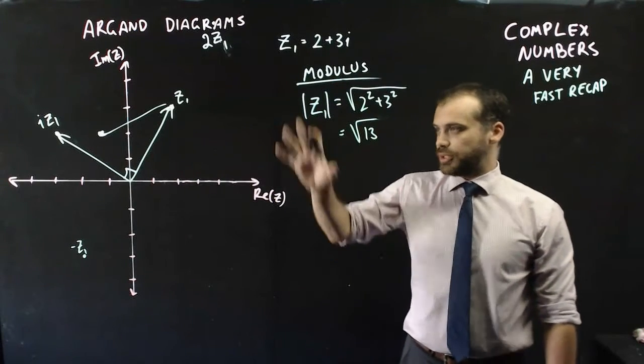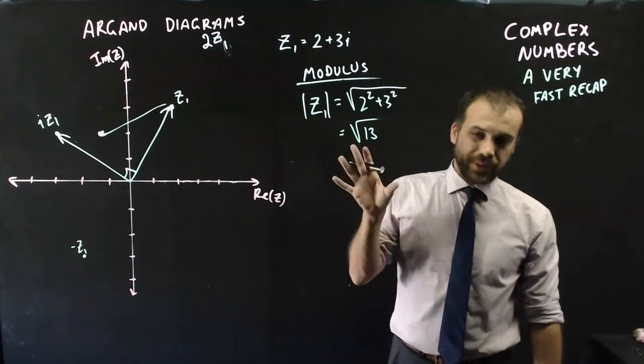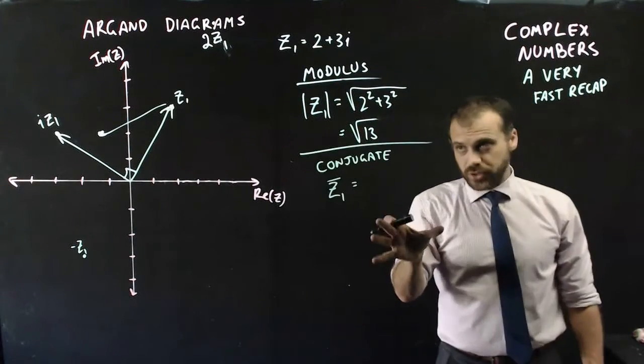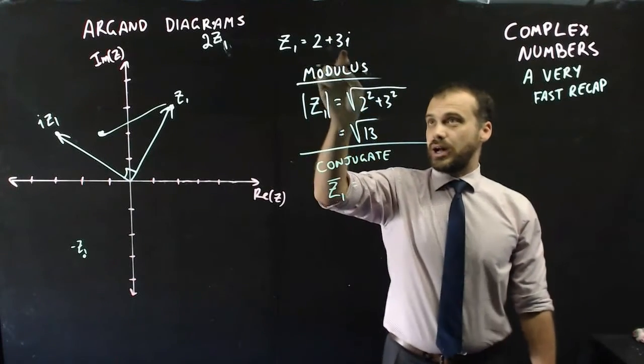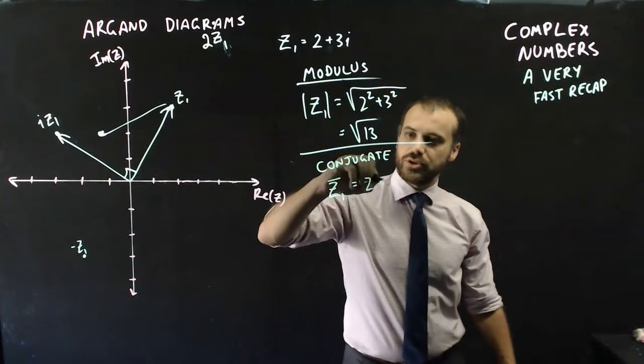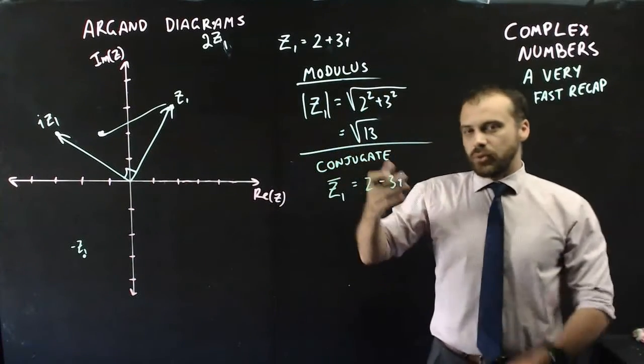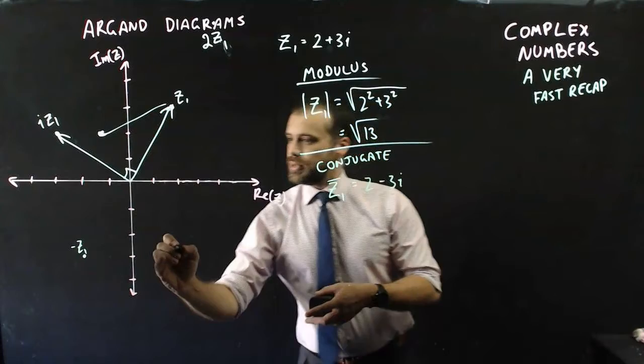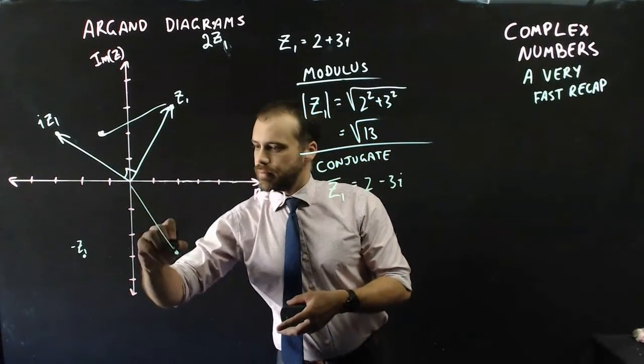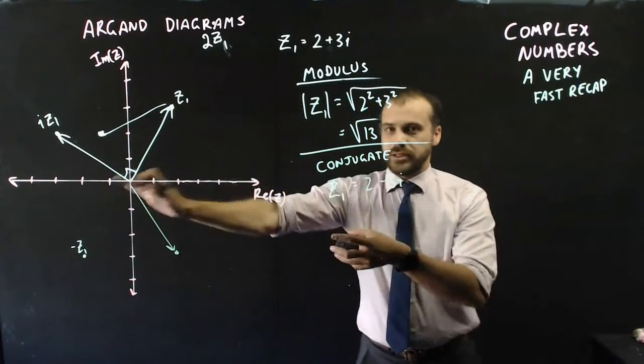Now, the other thing that I need to talk about really quickly while we've got our Argand diagram up here is the conjugate. To find the conjugate, we simply change this sign here, the sign of the imaginary component. So it's going to be 2 minus 3i. What this has the effect of doing is reflecting our complex number around the real axis.